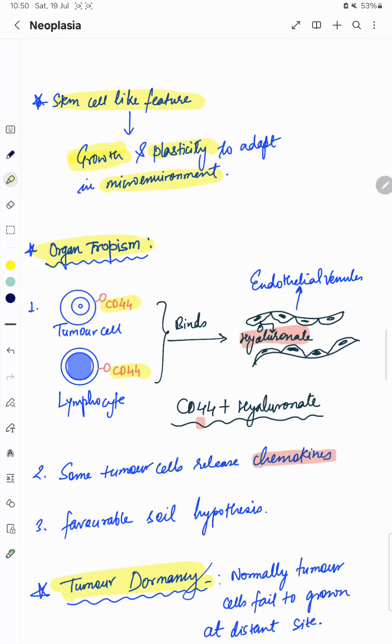Tumor cells express various markers like CD44. Lymphocytes also express the same marker and they bind to hyaluronate on the endothelial venules.